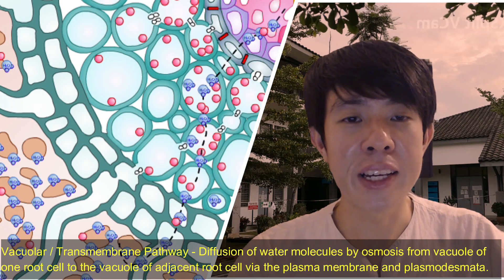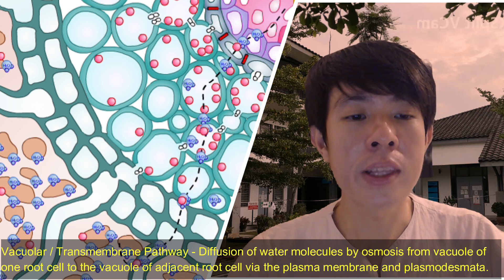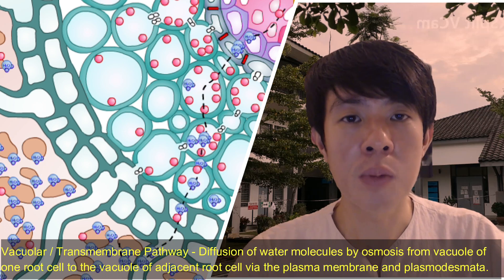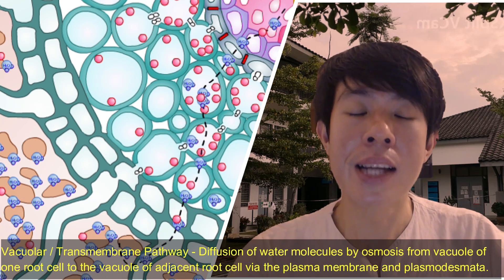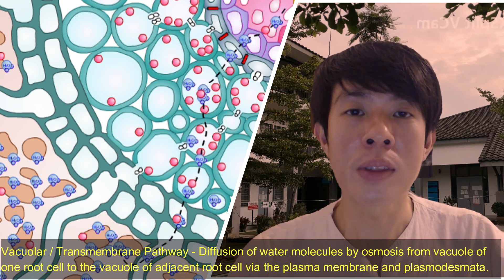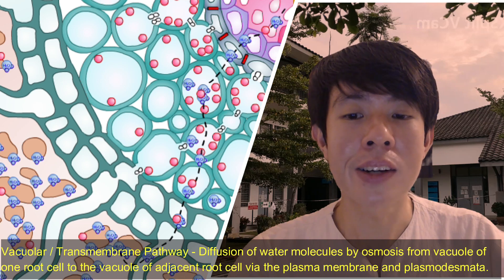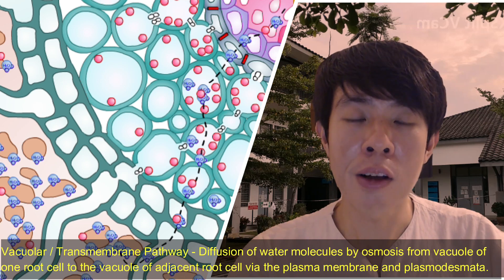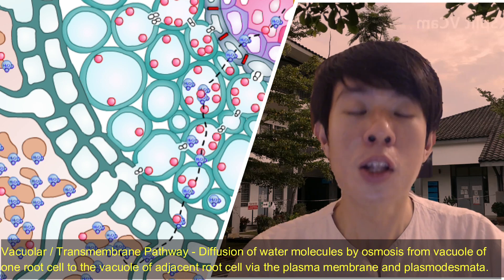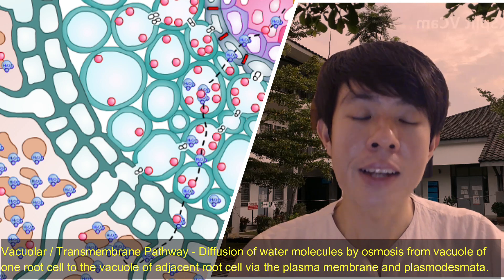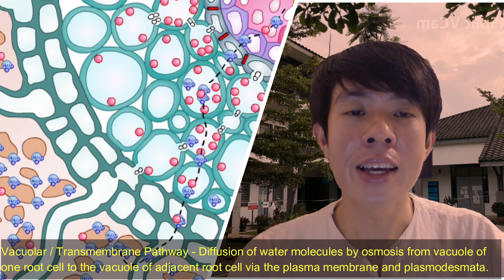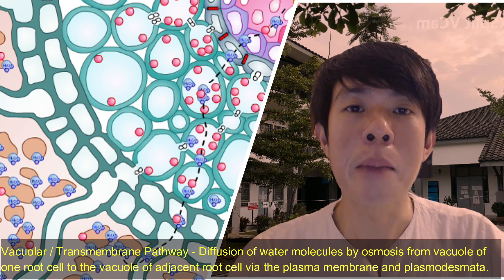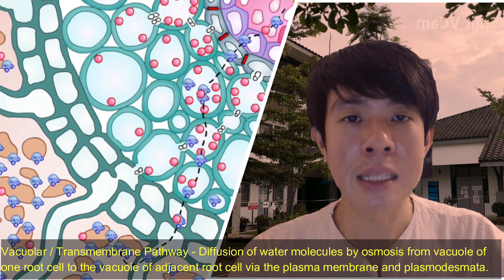In the vacuolar pathway or transmembrane pathway, look carefully how water diffuses by osmosis down the water potential gradient from one vacuole of the root cell to another via the plasma membrane and plasmodesmata.